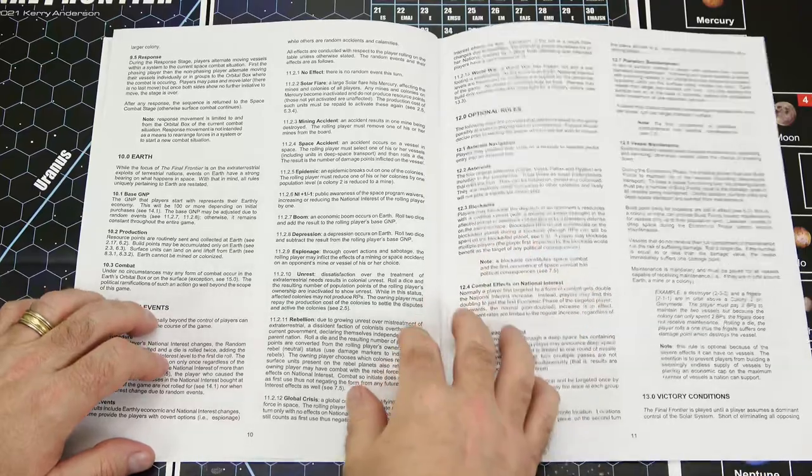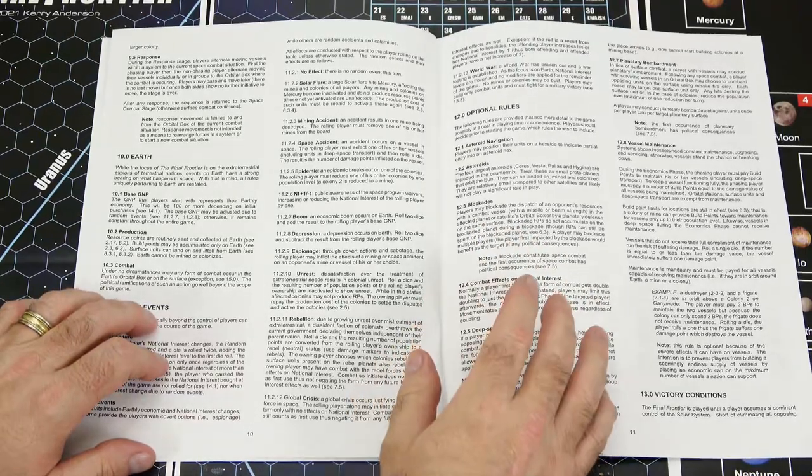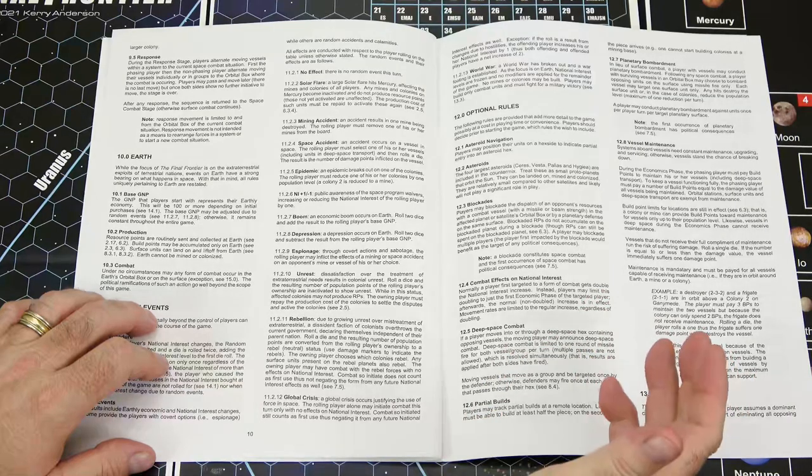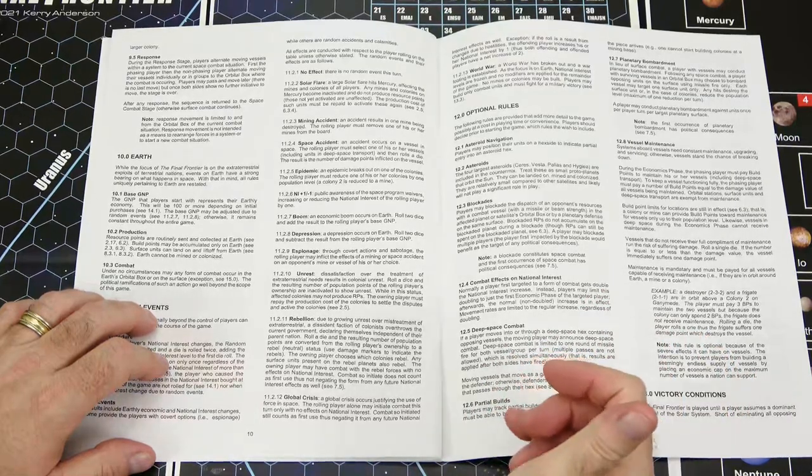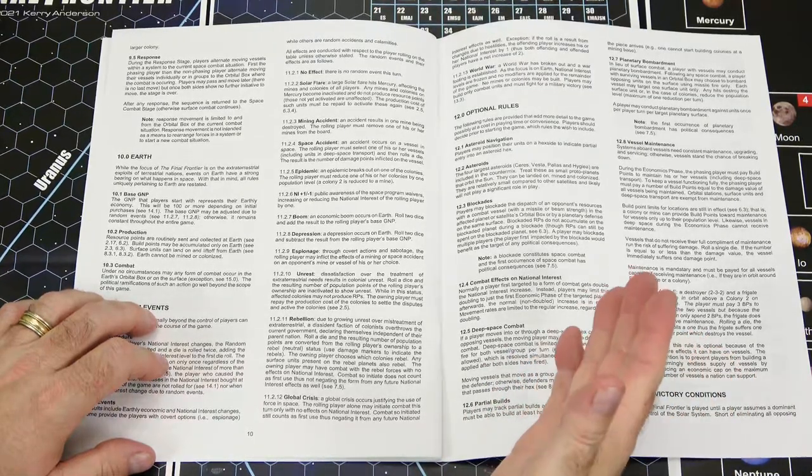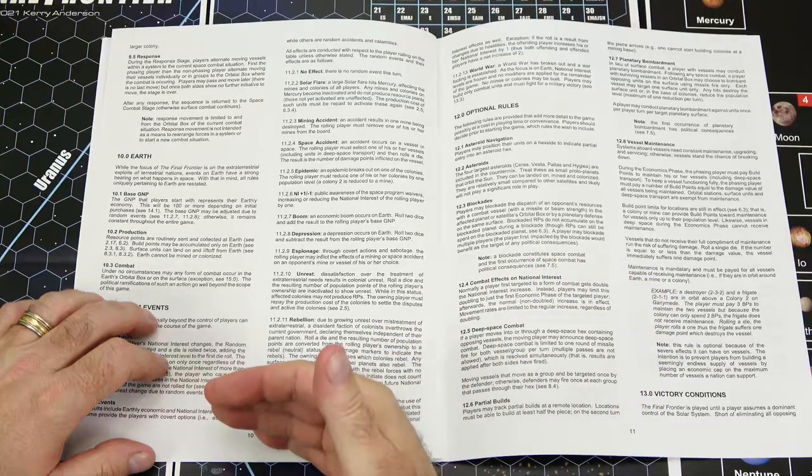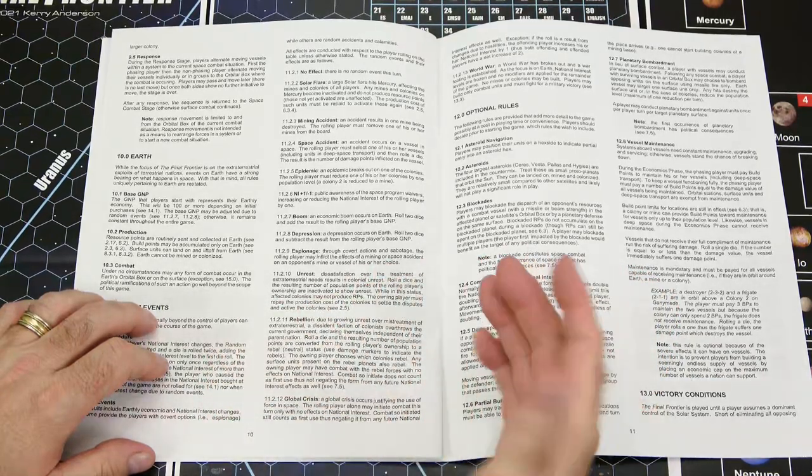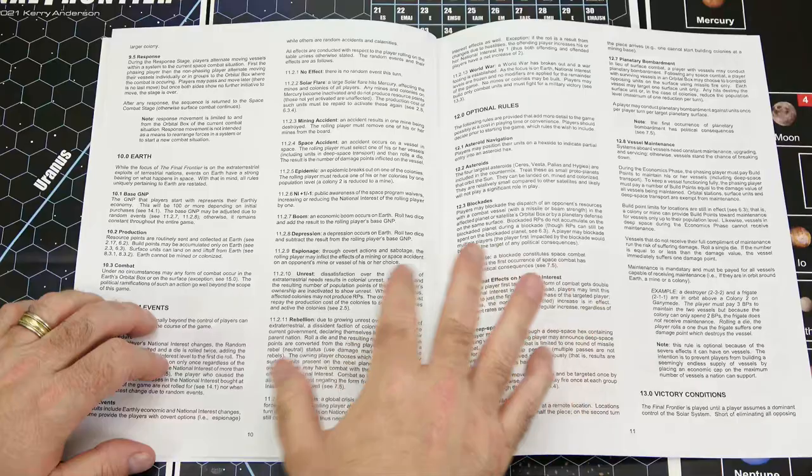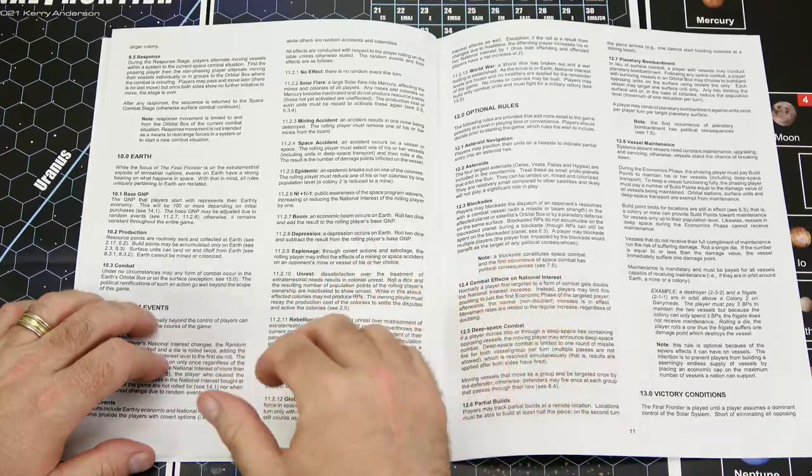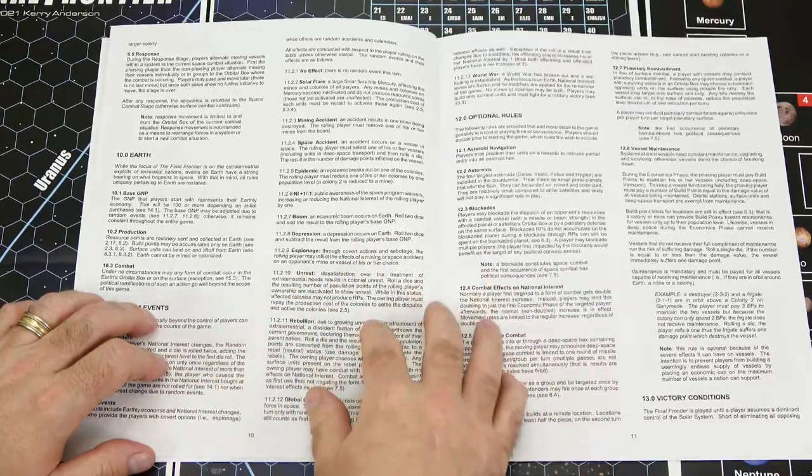Then we have optional rules here on page 11. Asteroid navigation, asteroids, blockades, combat effects on national interest, deep space combat, partial builds, vessel maintenance. That's one of the cool things about the economics. You want to make it a little tougher on yourself, you can actually have vessel maintenance. That way, not only are you building these units, but you're having to maintain them, so I think that's kind of cool.